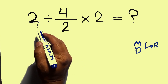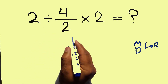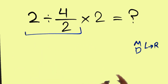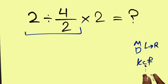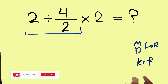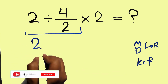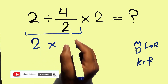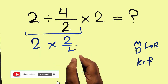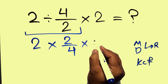So first, this division: 2 divided by 4 over 2. According to the KCF rule — K stands for Keep, C stands for Change, and F stands for Flip — we keep the first fraction, change the division to multiplication, and flip the second fraction. And here we have times 2.